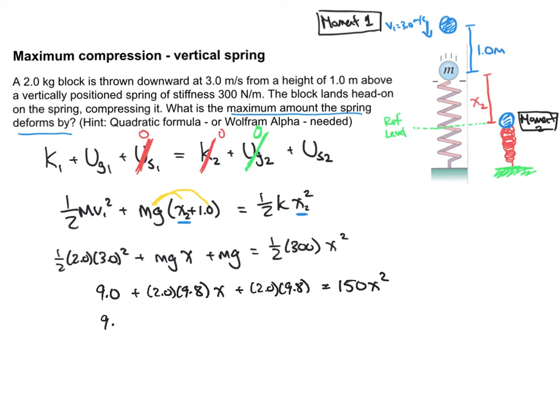Do some more evaluating here, so 2 times 9.8 is 19.6x, plus another 19.6 without an x, equals 150x squared.